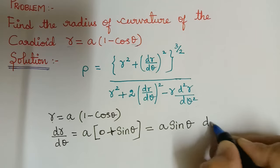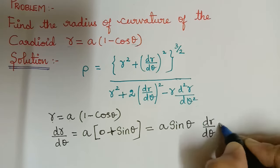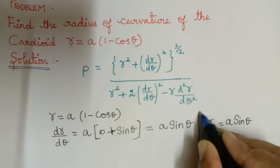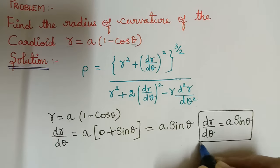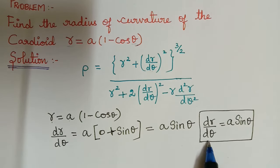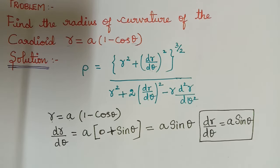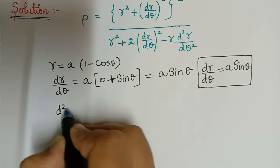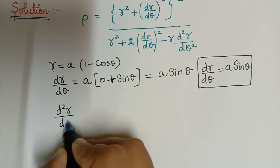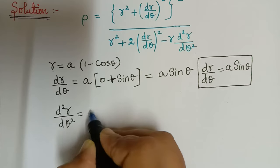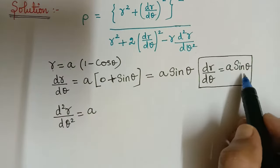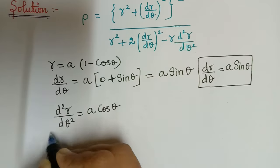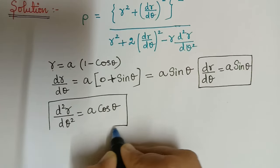Therefore dr/dθ is equal to a sin theta. Next we have to differentiate again with respect to theta to find d²r/dθ². So d²r/dθ² will be equal to a multiplied with the differentiation of sin theta, which is cos theta.